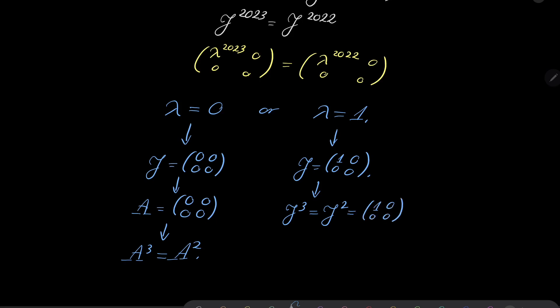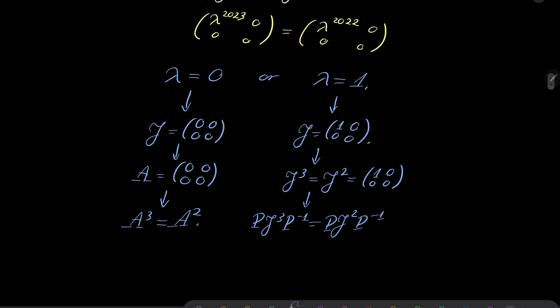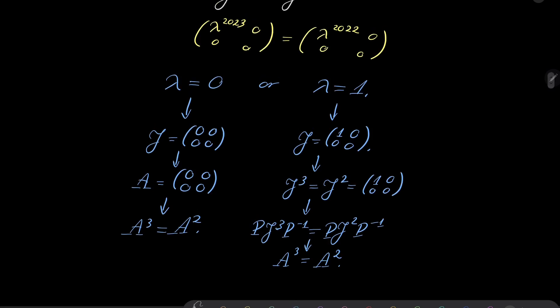And now we can multiply by P, J to the third power, P inverse, P, J squared, P inverse. And this, of course, means that A cubed equals A squared. So no problems there. So first case, we have dealt with the first case. And now let's consider second case.